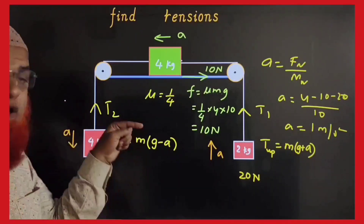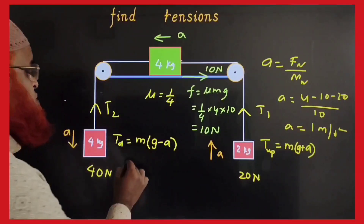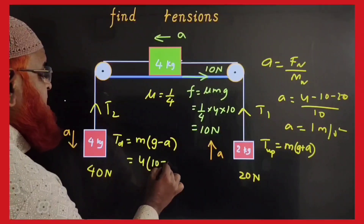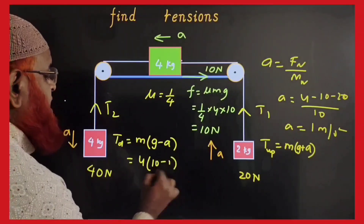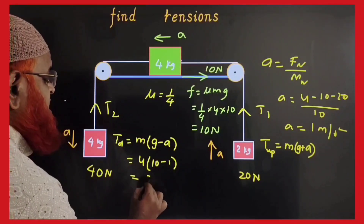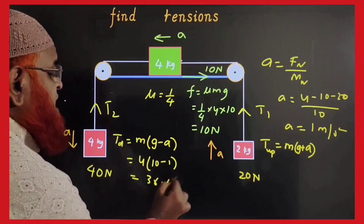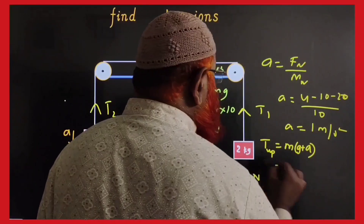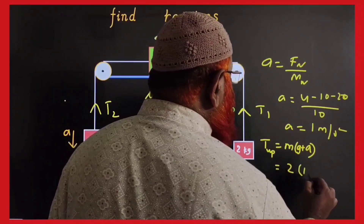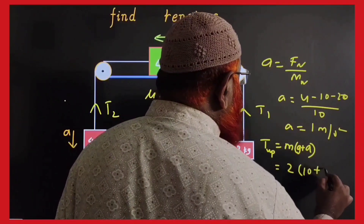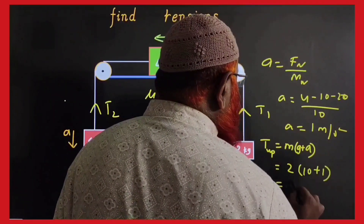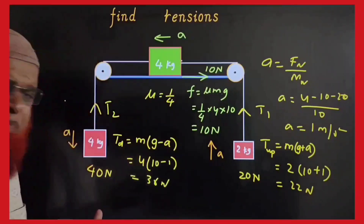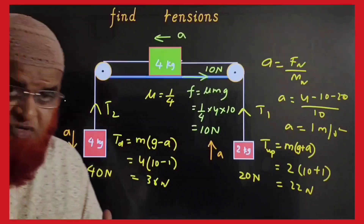Whenever you want to find out T1 and T2, this is coming down. Down means M into (G minus A). What is M here? 4 into (10 minus 1) = 36N. And this tension upwards is 2 into (G + 1), which is 22N. Like this in a simple way you can find out.